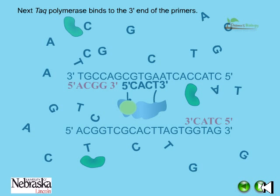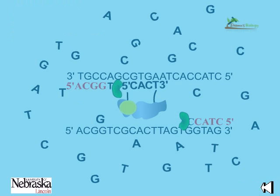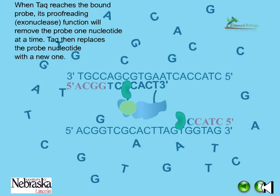Next, Taq polymerase binds to the 3-prime end of the primers. Taq reads the original DNA strand and adds nucleotides to extend the length of the complementary copy. When Taq reaches the bound probe, its 5-prime exonuclease function will remove the probe one nucleotide at a time. Taq then replaces the probe nucleotides with new ones.